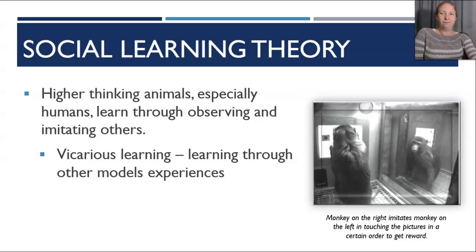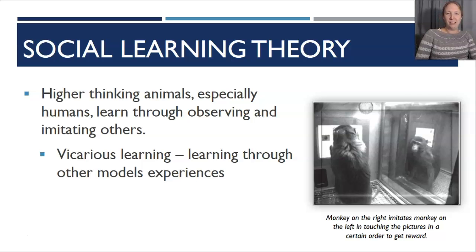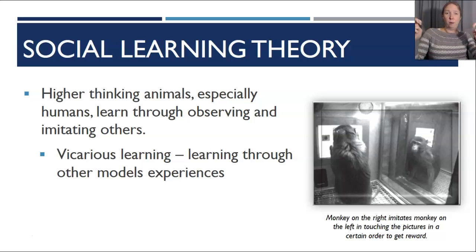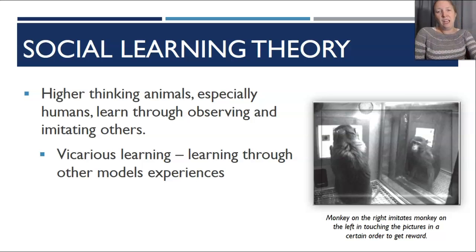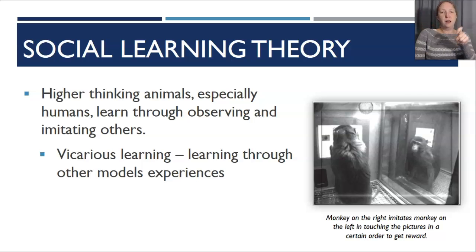Here are learning targets. Social learning theory is the idea that higher thinking animals, especially humans, learn through observing and imitating others. If you think of the phrase 'I want to live vicariously through someone,' vicarious learning is the same thing — you are learning through someone else's experience. We call these someone else's models. We see a graphic of monkeys where the monkey on the right imitates the monkey on the left in touching pictures in a certain order to get a reward.